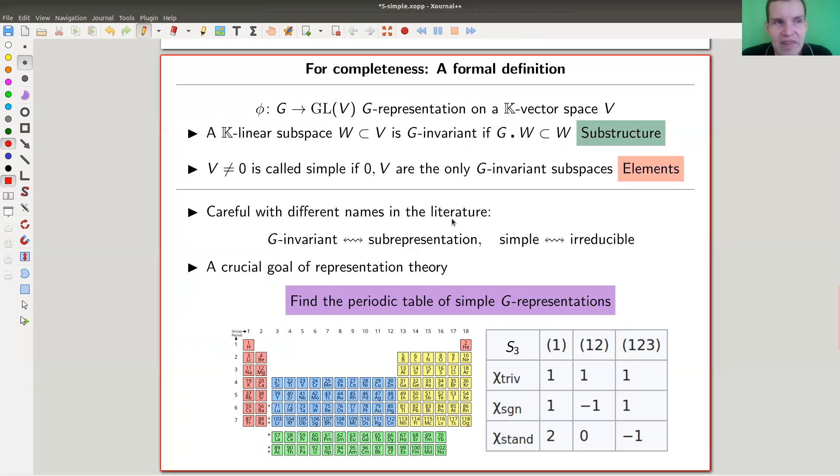And then the definition is just exactly what you think it would be. A subspace is invariant if your group action just gets you back to where you started, like my eigenvector, just a generalized eigenvector type thing. And you call a representation simple, well, let's say it's not zero. A zero representation is a little bit boring. But we call it simple if it has only trivial substructures. And the trivial substructures are, of course, zero and the space itself. And these are really the elements of the theory. And then what we would like to do is find a periodic table of simple representations.